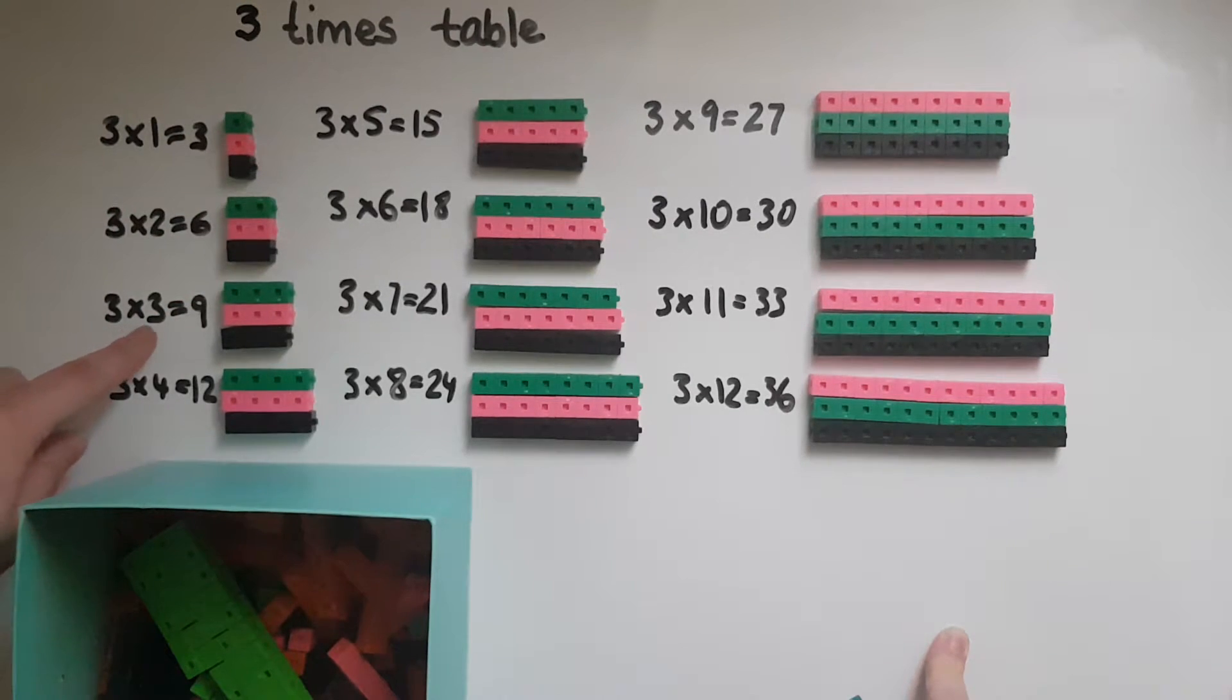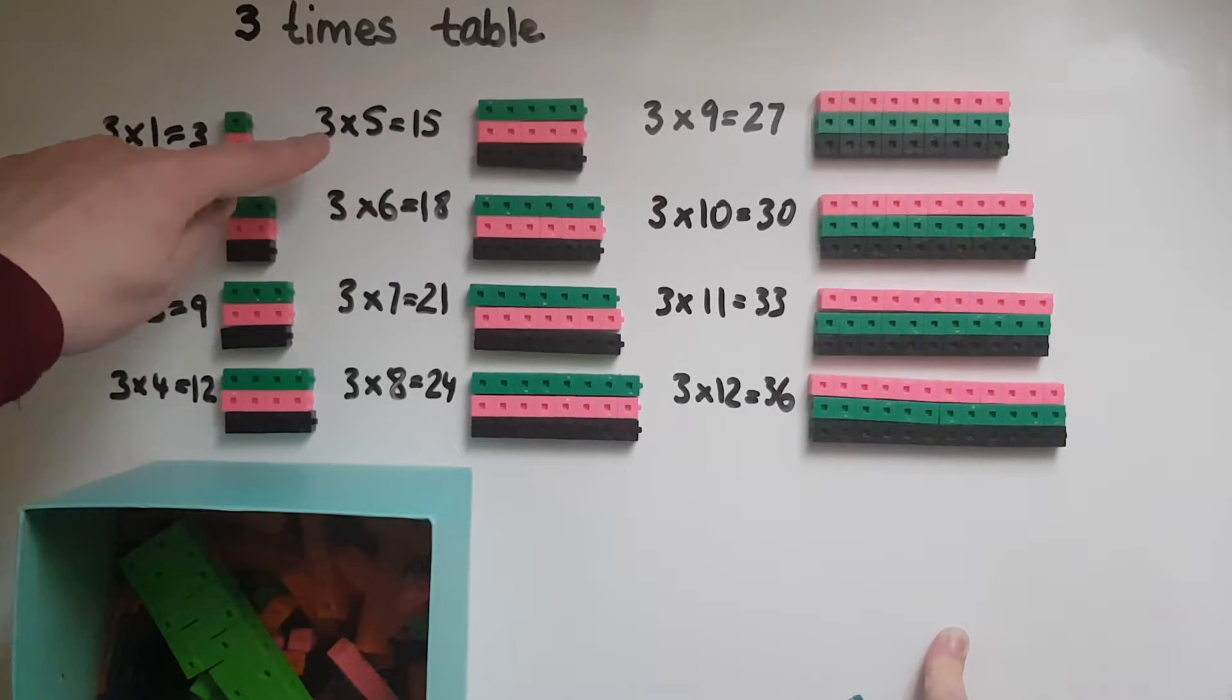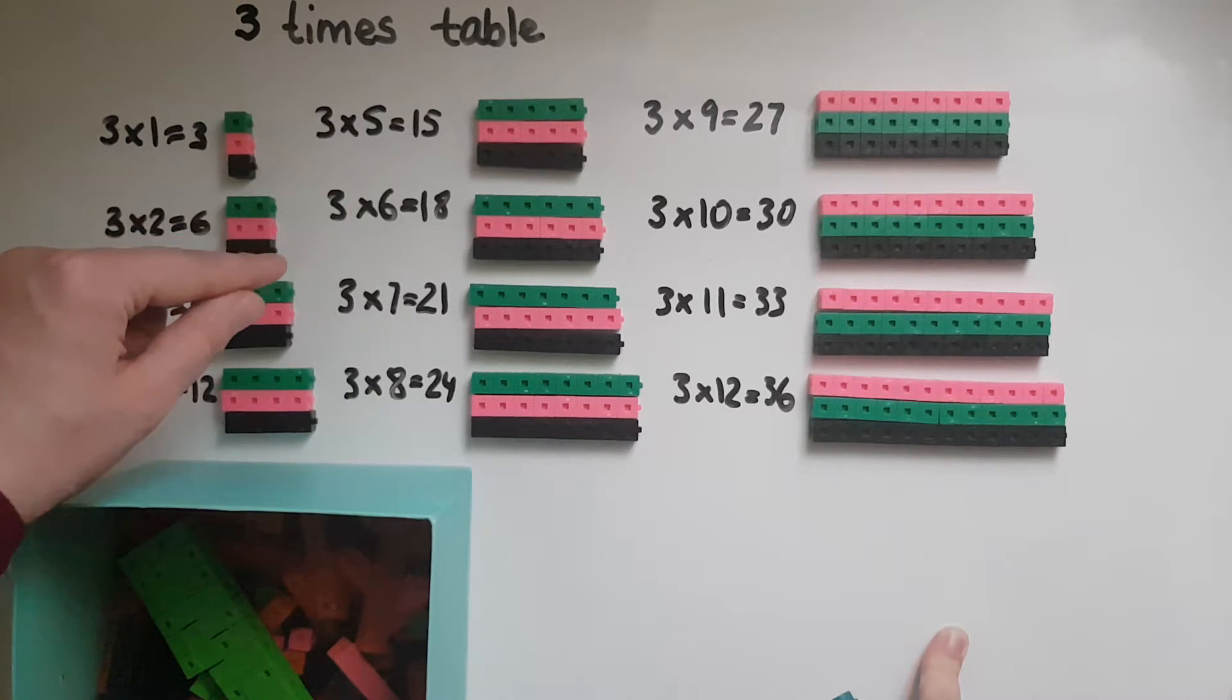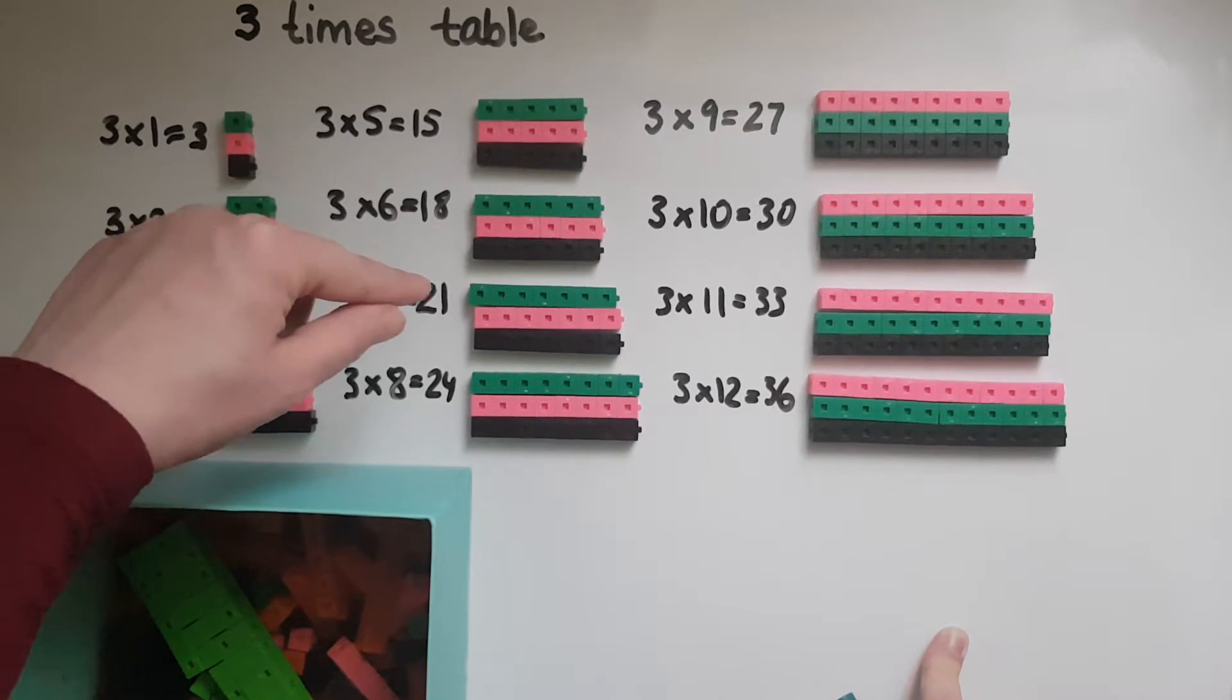Three lots of three, so that's three and three and three, makes nine. Three lots of four, so four and four and four, makes 12. Three lots of five, or three times five, equals 15. Three times six equals 18. Three times seven equals 21.